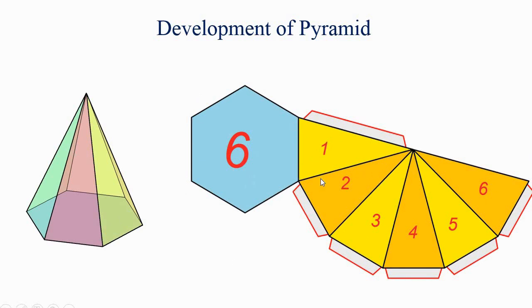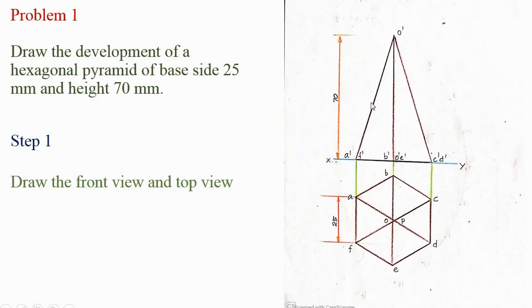If it is a pentagon you will have five triangular faces and a base which is a pentagon. If it is a square prism, likewise. Now let us solve a problem on how we are obtaining this. Problem one: draw the development of a hexagonal pyramid of base side 25 mm and height 70 mm.